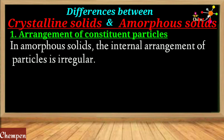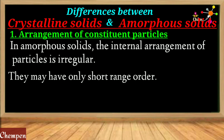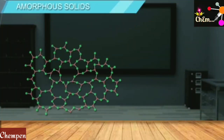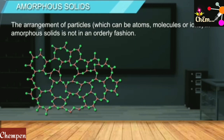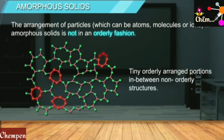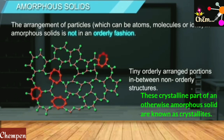In amorphous solids, the internal arrangement of particles is irregular. Though amorphous solids do not possess long-range regularity, they may possess small regions of orderly arrangement. These crystalline parts of an otherwise amorphous solid are known as crystallites. The disorganized arrangement of constituent particles within an amorphous solid is not regular at all; however, in small regions, regularity is observed.